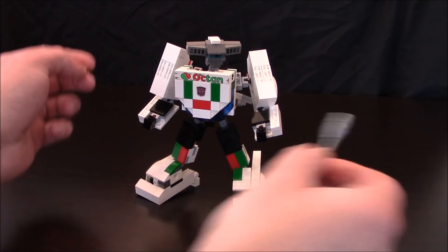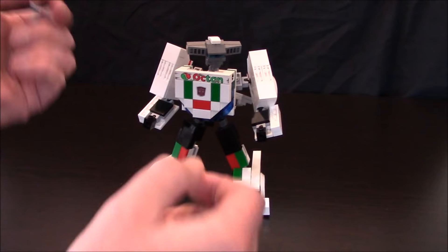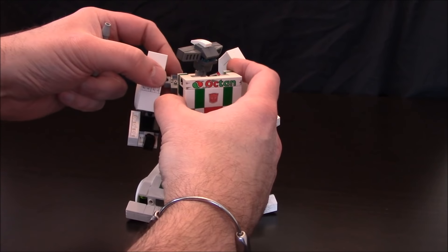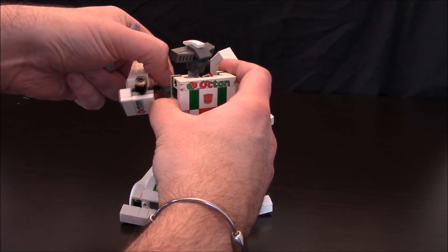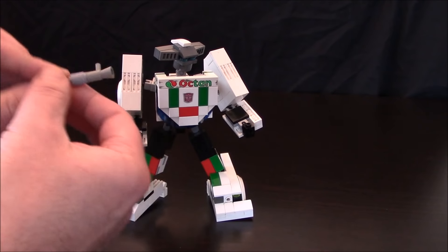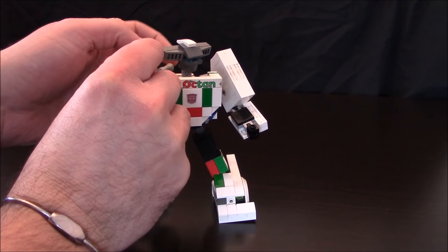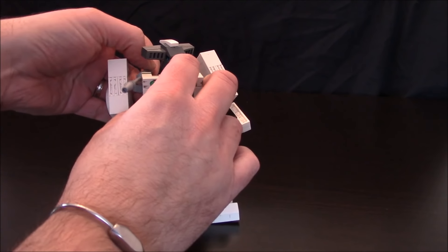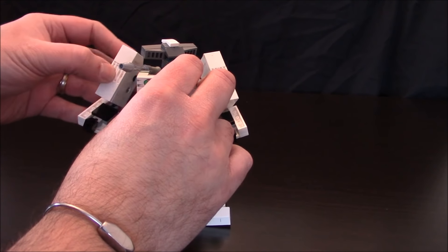And you have now got yourself an Octan version of Wheeljack. To complete the model, you can put in his G1-inspired or cartoon-inspired shoulder cannon. To do this, you have to rotate the shoulder joint around 180 degrees so that you have studs pointing up, and then you can put on that shoulder cannon.